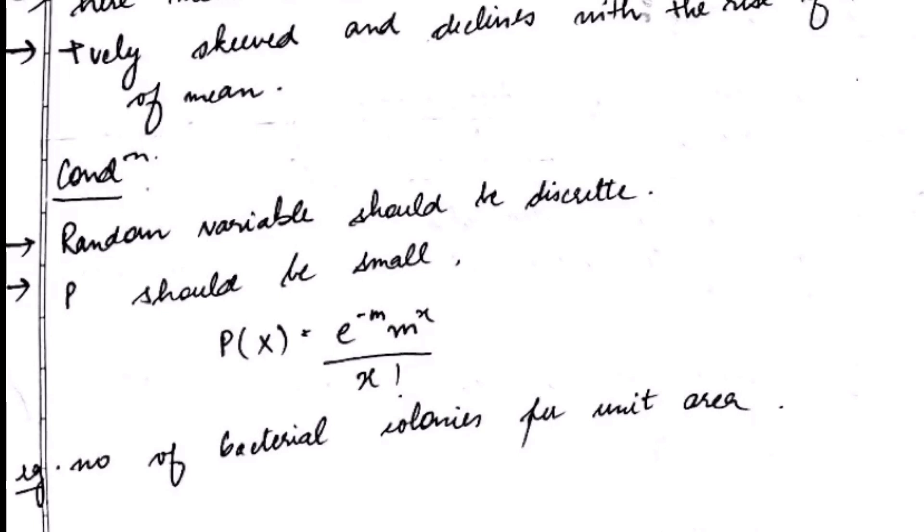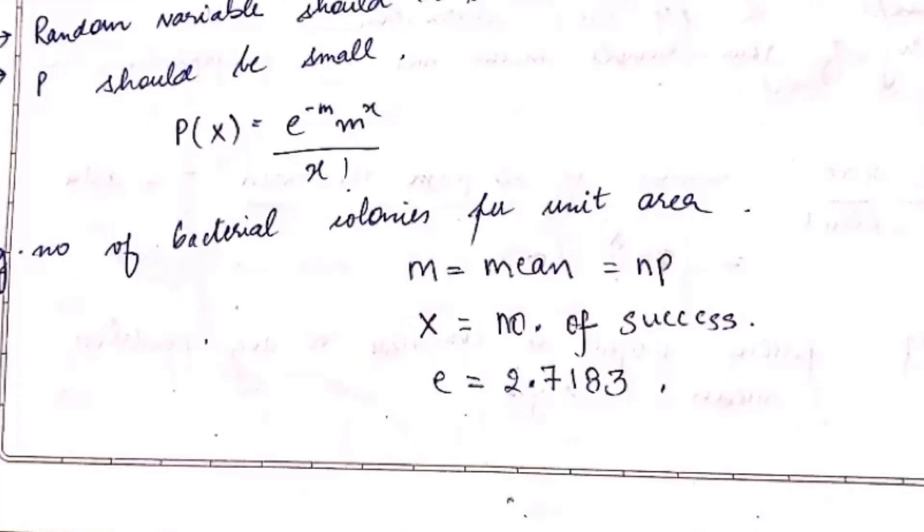Probability distribution function of Poisson distribution is given as: probability of x success equals e raised to power minus m times m raised to power x divided by factorial x, where m is the mean, x is number of success, and e is 2.718. It is used to calculate number of bacterial colonies per unit area.